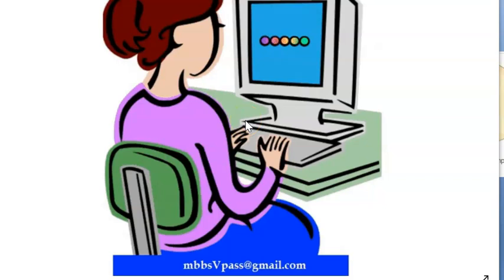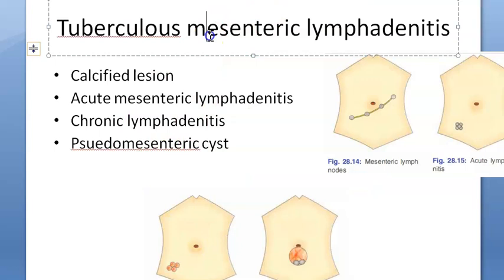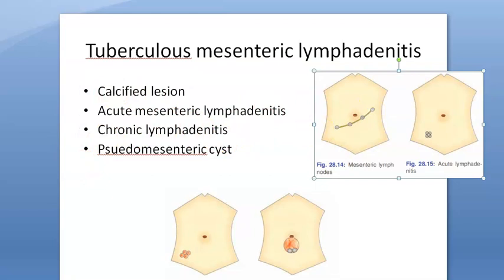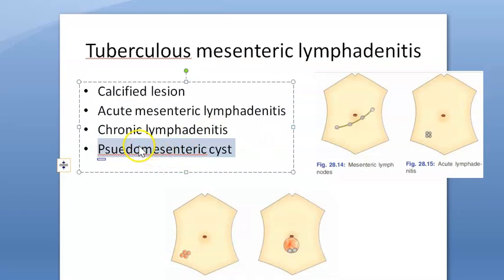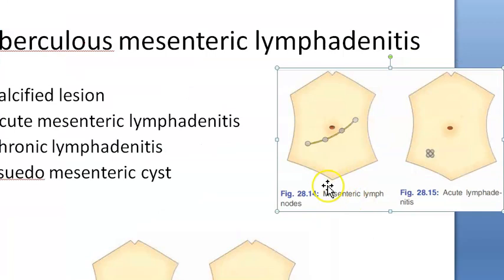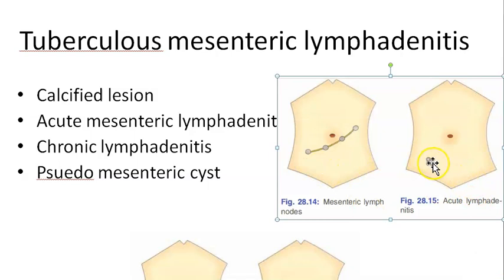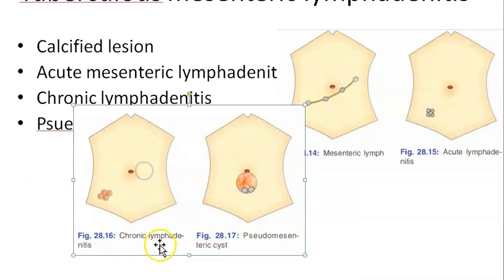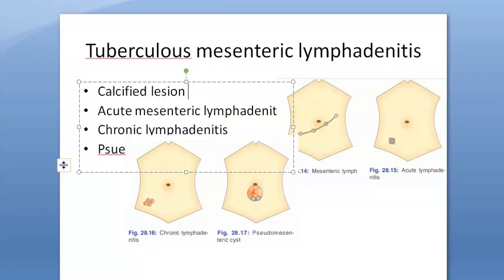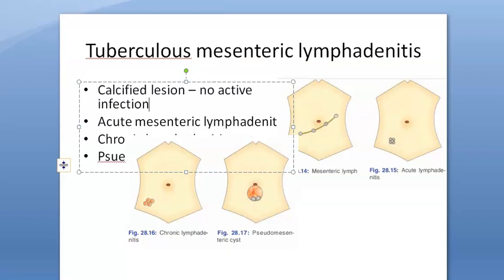In this video we have focused on cervical lymphadenitis, but also covering mesenteric lymphadenitis. They can ask mesenteric lymphadenitis in the exam. Here you will see calcified lesions, and varieties include acute and chronic mesenteric lymphadenitis, and pseudo-mesenteric cyst. In the calcified lesion, there is no active infection but there is infection present.